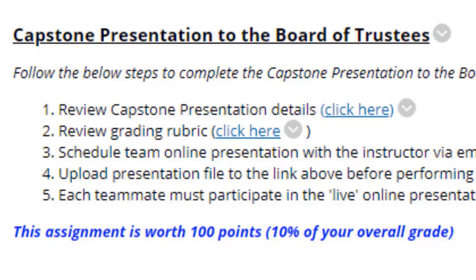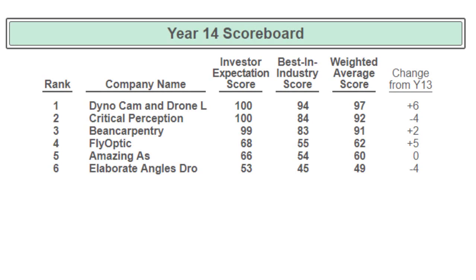Now let's look at the results of year 14 within Globus. Here we have the year 14 scoreboard. Way to go, Company D — they are first place in the year 14 scoreboard and now first place in the game-to-date scoreboard. Company D is at 97; they gained six points. That doesn't sound like a lot, but Company C dropped four and Company B only gained two. That's what I was trying to convey all semester — you don't have to gain a lot of points, especially when other teams drop points.